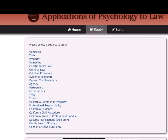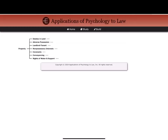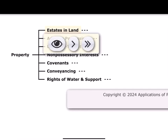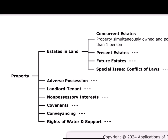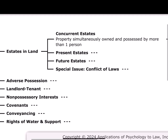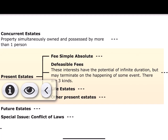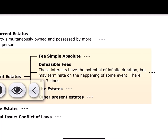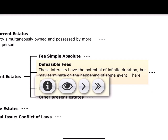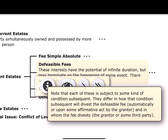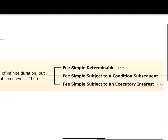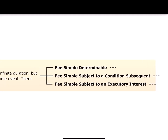I'm going to Proponics and opening the property schema to look at estates in land — present estates and future estates. I think what we have here is going to be a defeasible fee: an interest that has the potential of infinite duration but may terminate on the happening of some event. We've got three kinds and I need to type this conveyance. It has a condition subsequent that goes to a third party.